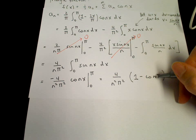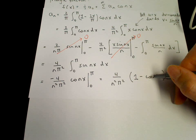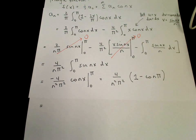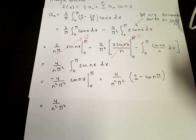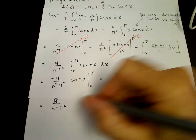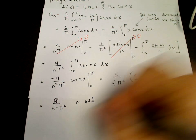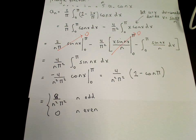Now, cosine(nπ) equals 1 when n is even (0, 2, 4, ...), so 1 minus 1 equals 0 — those terms vanish. When n is odd (1, 3, 5, ...), cosine(nπ) equals minus 1, so 1 minus (minus 1) equals 2, giving a_n equals 8 over n²π² when n is odd, and 0 when n is even.